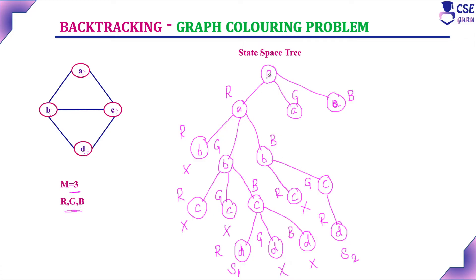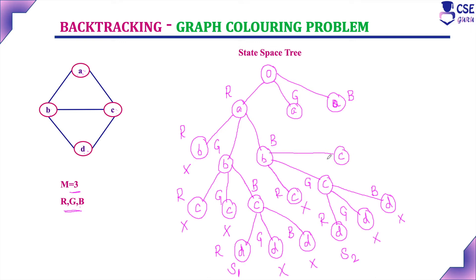This is one more solution: A is assigned with red, B with blue, C with green, and D with red again. Can I assign green to D? No, because C is assigned with green — that is a dead end. Can I assign blue for D? No, B is assigned with blue, so we cannot assign blue to an adjacent vertex D. We have checked all three possibilities for D. Backtrack to the previous level and check the possibility for C — already red and green have been checked. Can I assign blue to C? No, because B is assigned with blue and that is an adjacent vertex.